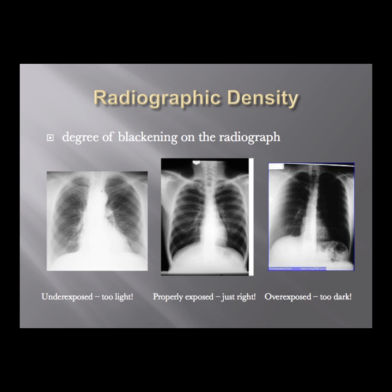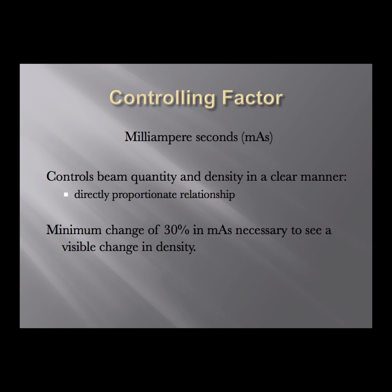Those three examples help imprint in your mind what density means on a radiographic image. We talked about mAs as being the controlling factor for radiographic density, and it's the controlling factor because it's the easiest one to use. We saw in class that KVP actually has a much more severe effect on density, but mAs is said to be the controlling factor because it's the first one you'll go to as a technologist when you need to make a change in density.